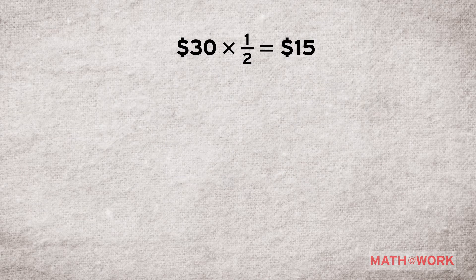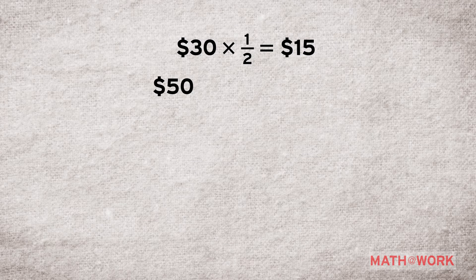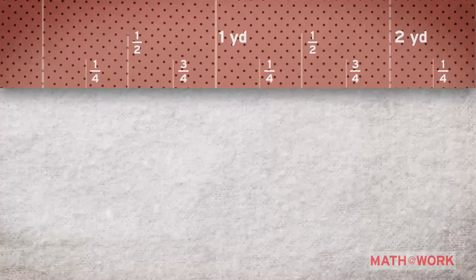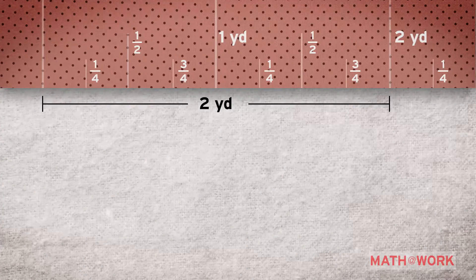Your budget is $50. We need to subtract the cost of the lace from your total budget. 50 minus 15 is 35. That means you have $35 to spend on the dress fabric. You need about two yards of the dress fabric — let's see how much you can afford.